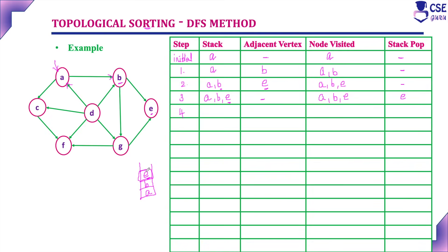After popping E, the top element is B. Consider the next unvisited adjacent vertex to B — that is G. Node visited is A, B, E, and G; no elements popped here. The adjacent vertex visited is G — push G into the stack. Top of the stack is now G.